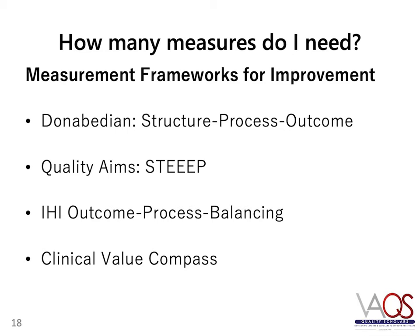New improvers often have difficulty picking measures. You will almost always have a measure that reflects your specific aim or outcome measure, and you almost always need other measures as well. It is often useful to think of having a measurement framework as a structure for your measurement plan. Measures at the regional and national level for healthcare organizations usually use either the Donabedian structure-process-outcome model or the quality aims STEEP model — STEEP stands for safe, timely, effective, efficient, equitable, and patient-centered.